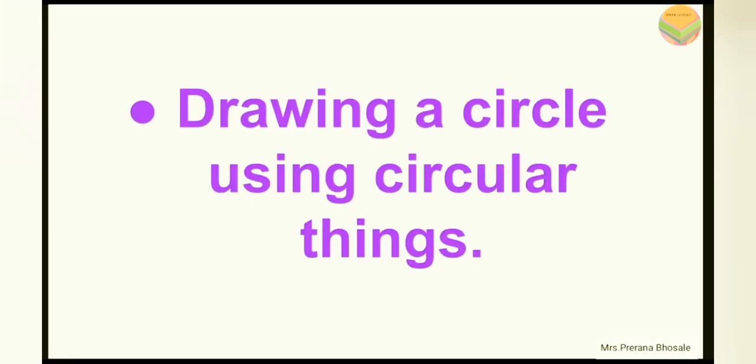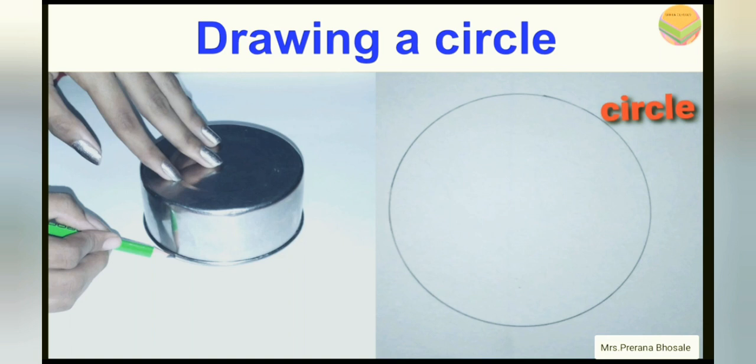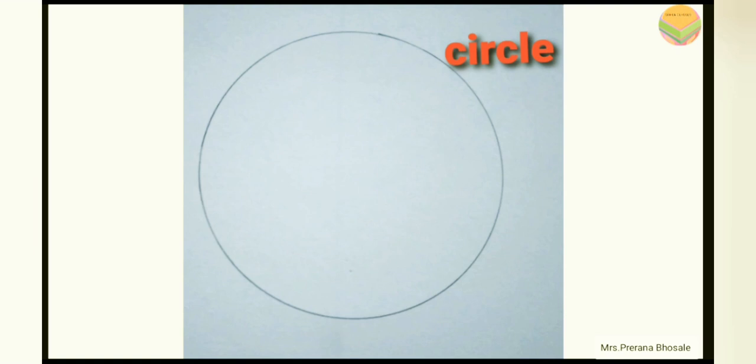First, we are going to see how to draw a circle using a circular thing. For this, you have to take a small bowl, then place it upside down on a piece of paper and trace its outline by using a pencil. Then remove the bowl. The figure which you will get on this paper is called a circle.